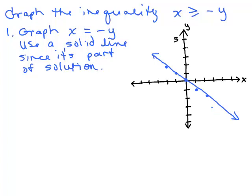So here I've graphed it. Now remember x equals negative y is the same thing as y equals negative x if you multiply both sides by negative 1. So just note that's the same as y equals negative x, right?